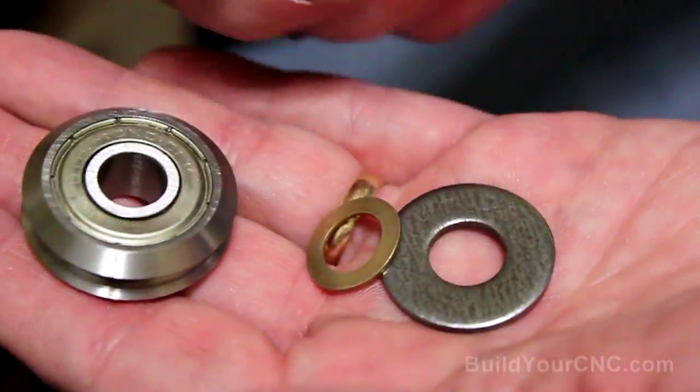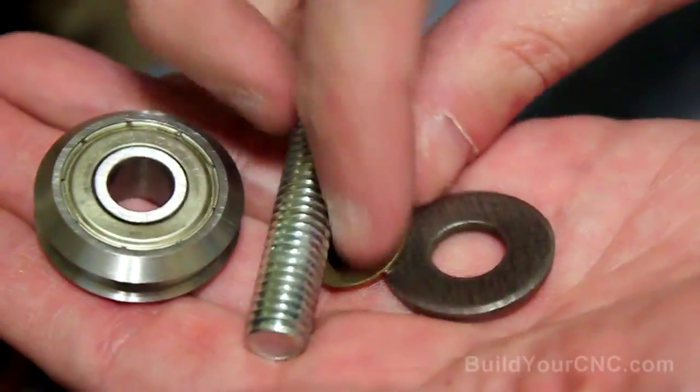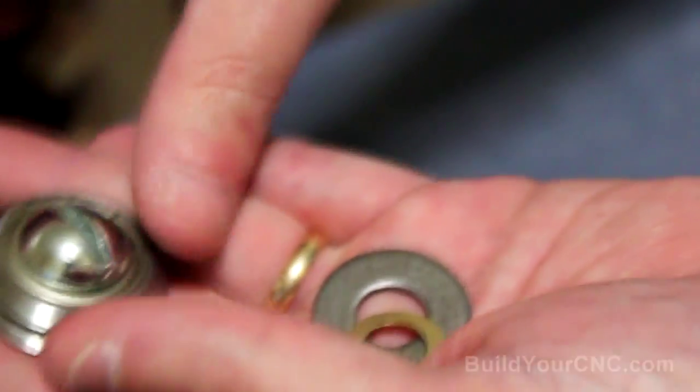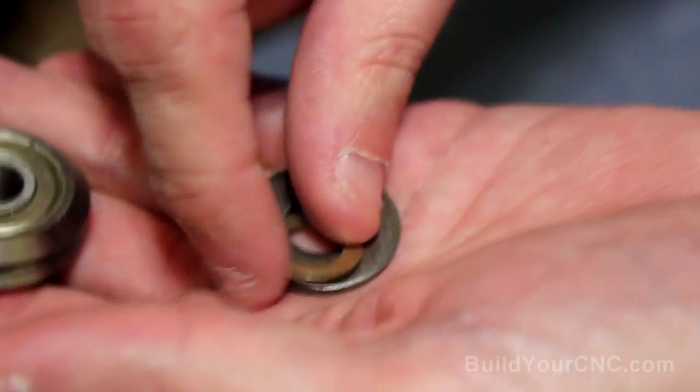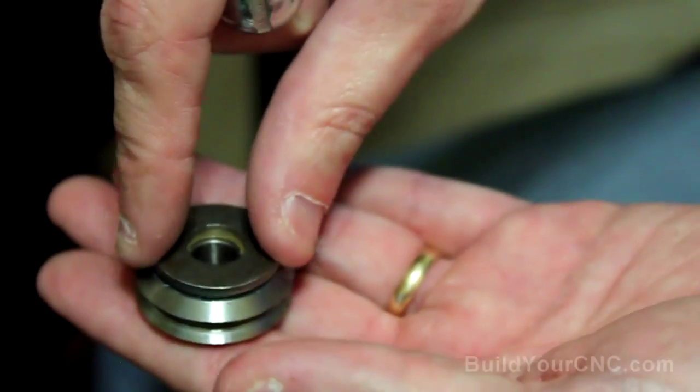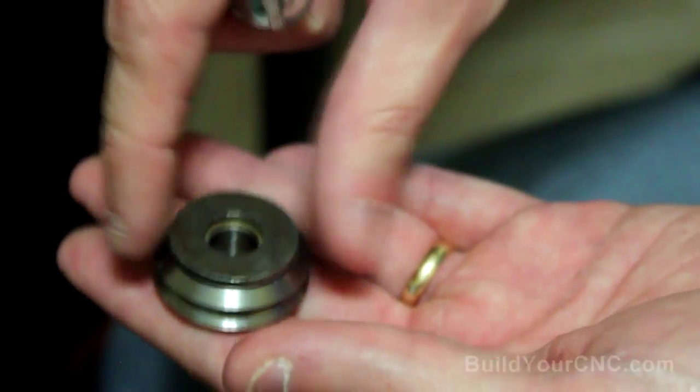Okay, so for the most part we're going to be using these components for the assembly of the v-groove bearing. Generally we'll be using this type of washer to provide a spacer for the bearing so this washer doesn't touch the sides of the bearing, preventing it from turning. So if I put this between the bearing, then the bearing can turn pretty easily.